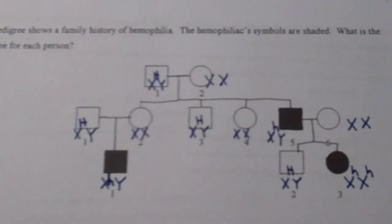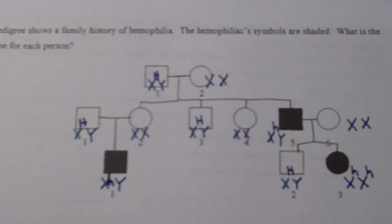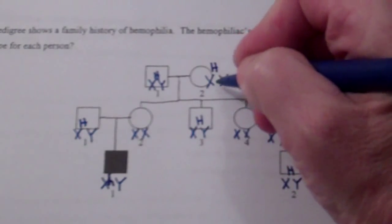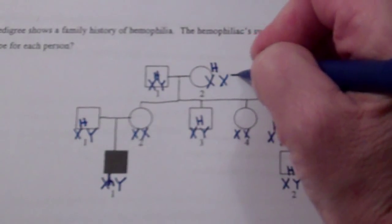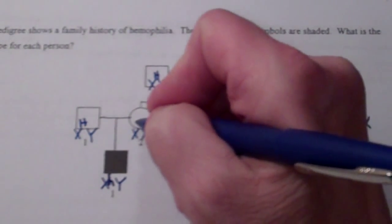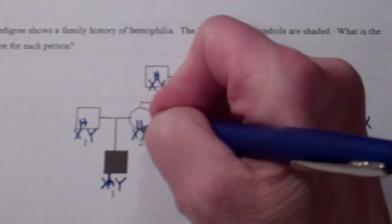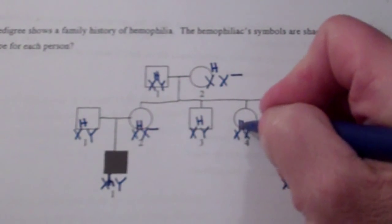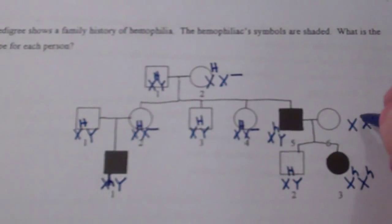Now let's look at the females. Since none of them are shaded, we can give all of these dominant females at least one dominant allele: X^H — leave a blank — X^H — leave it blank — X^H.